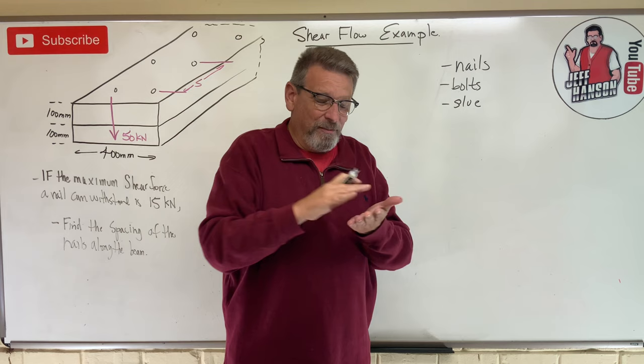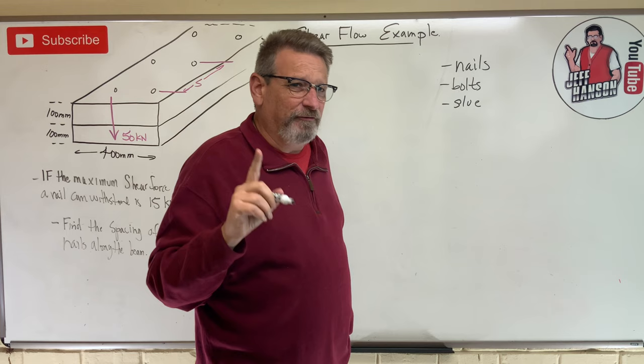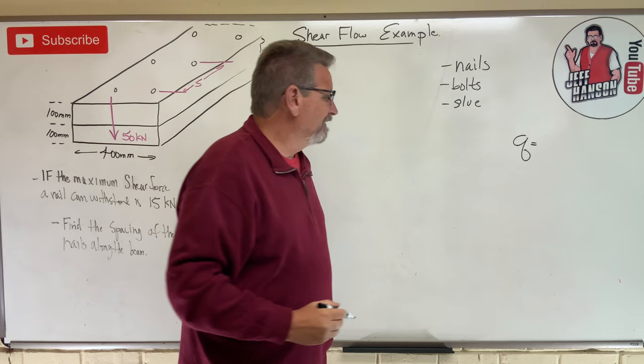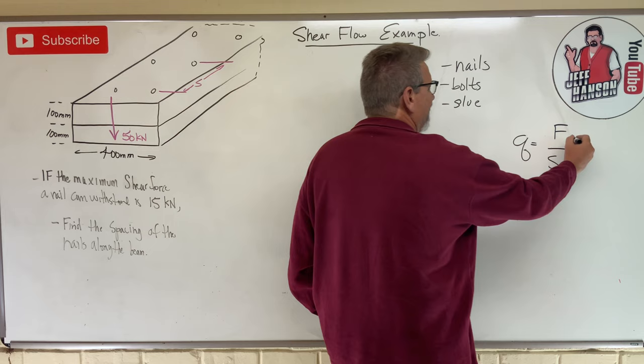Shear flow is a measure of force per length, and it's given by little q. We say little q is F divided by S.